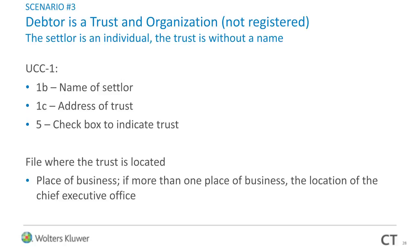Trust scenario three: the debtor is a trust, the organization is not registered, the settlor is an individual, and the trust is without a name. On box 1B, enter the name of the settlor — one of the few times you'll see that. On 1C, the address of the trust. Check box 5. File where the trust is located, which will be the chief executive office, wherever they cut the checks. There are many common themes here, all purpose-driven to ensure filing in the proper location and achieve some uniformity in trust filing.